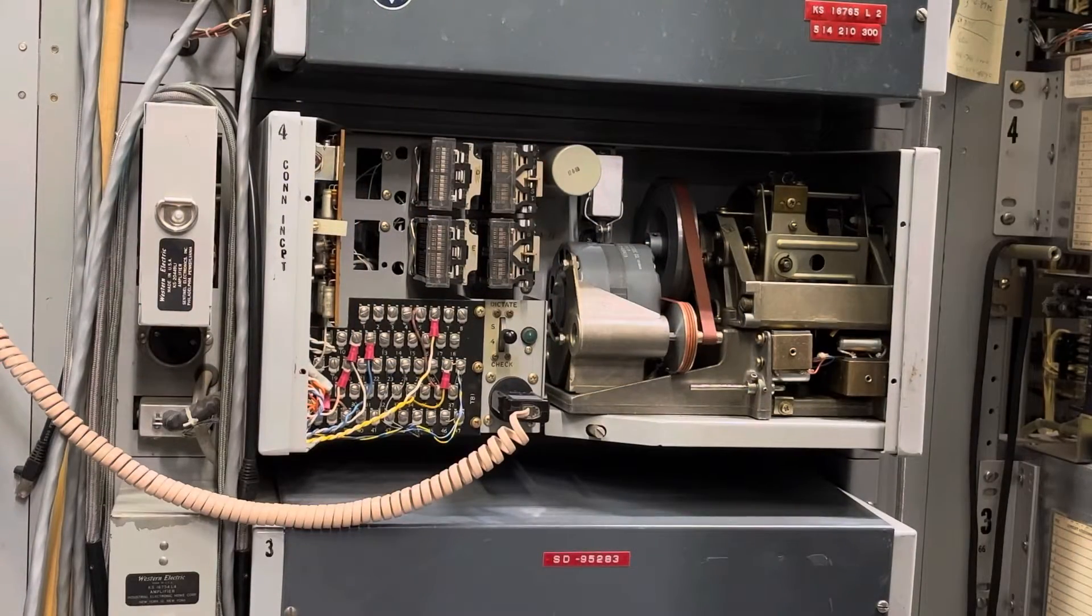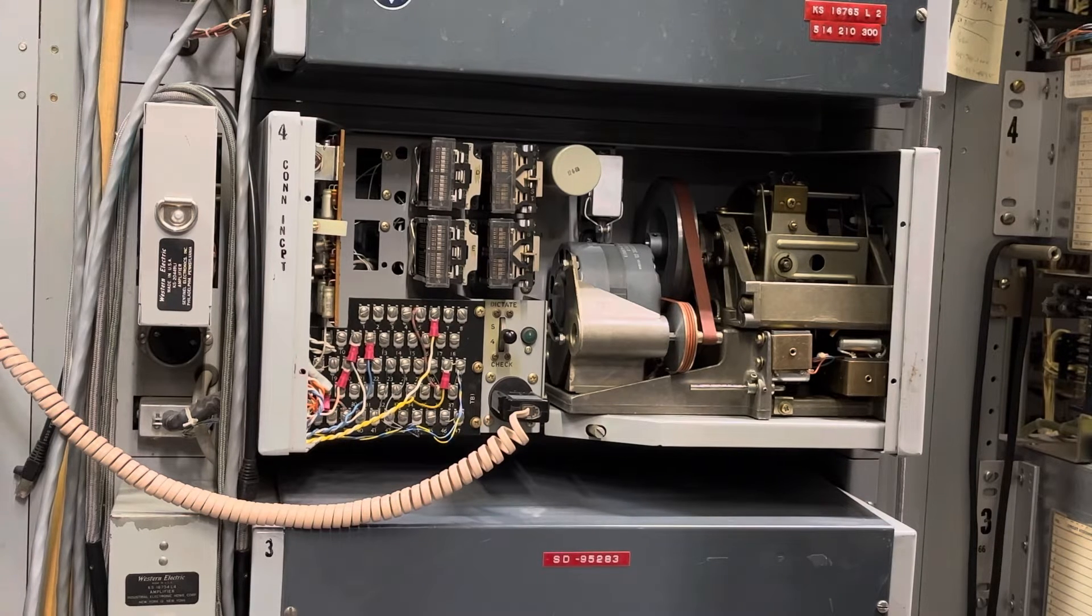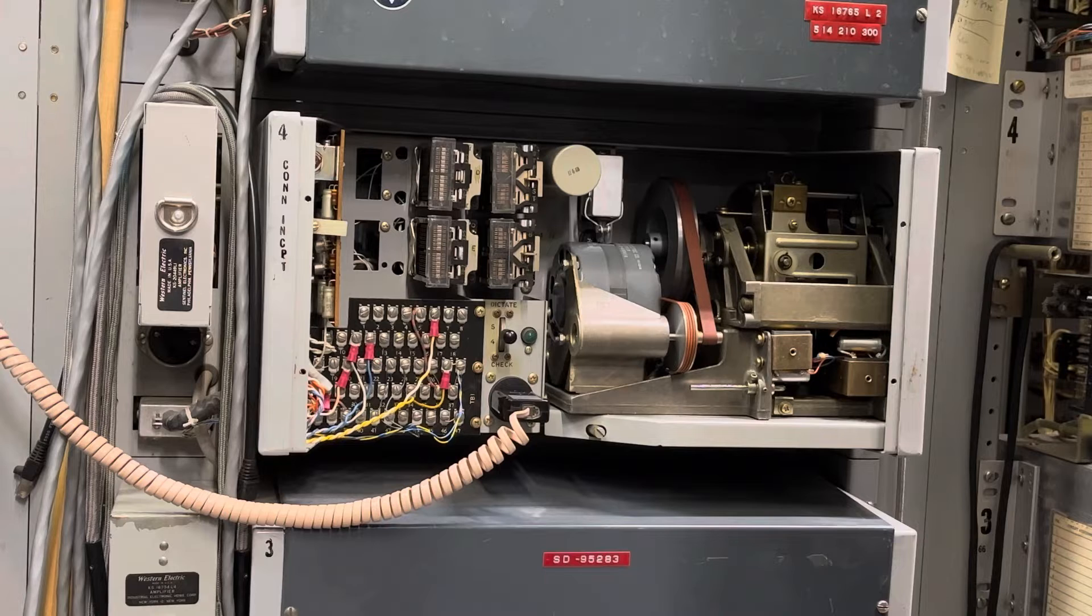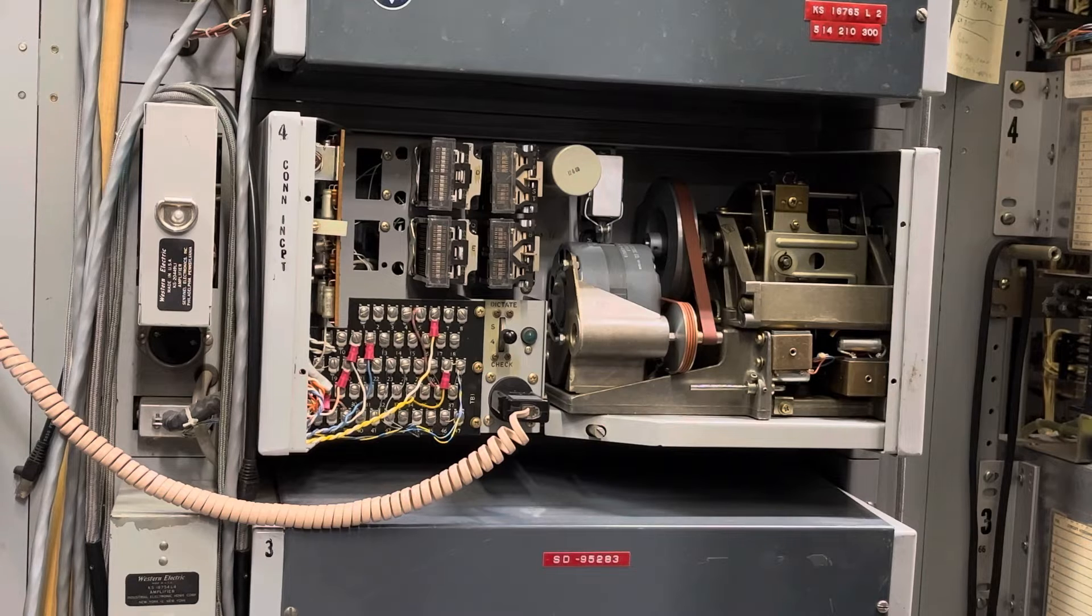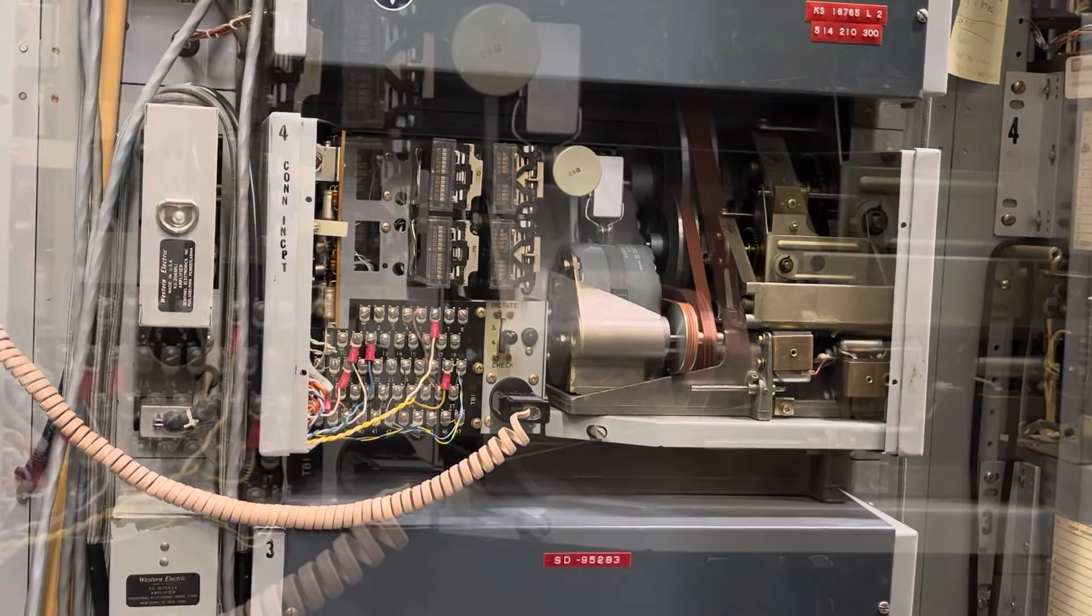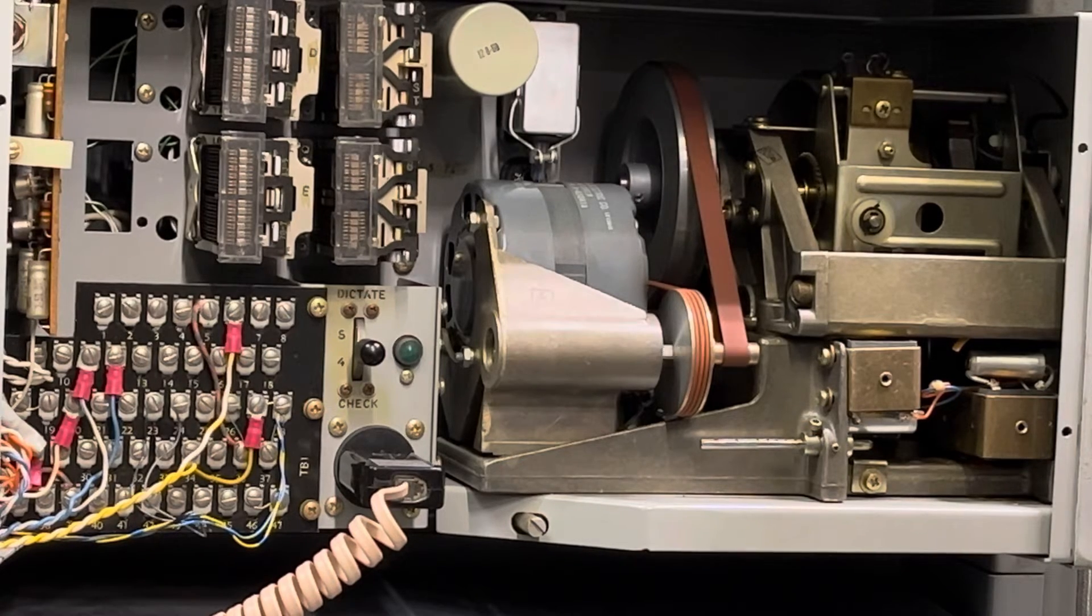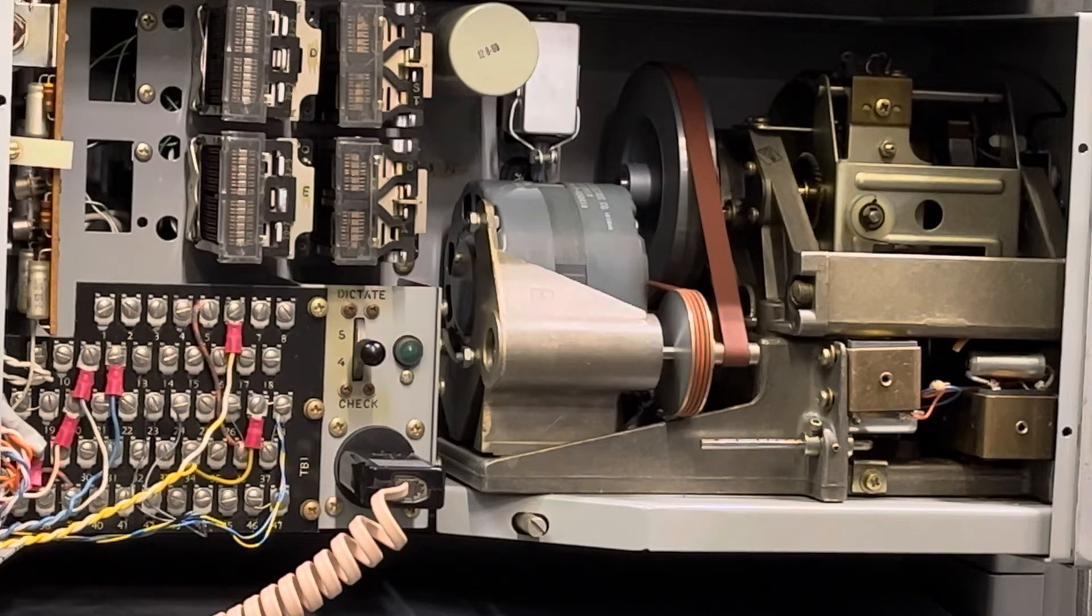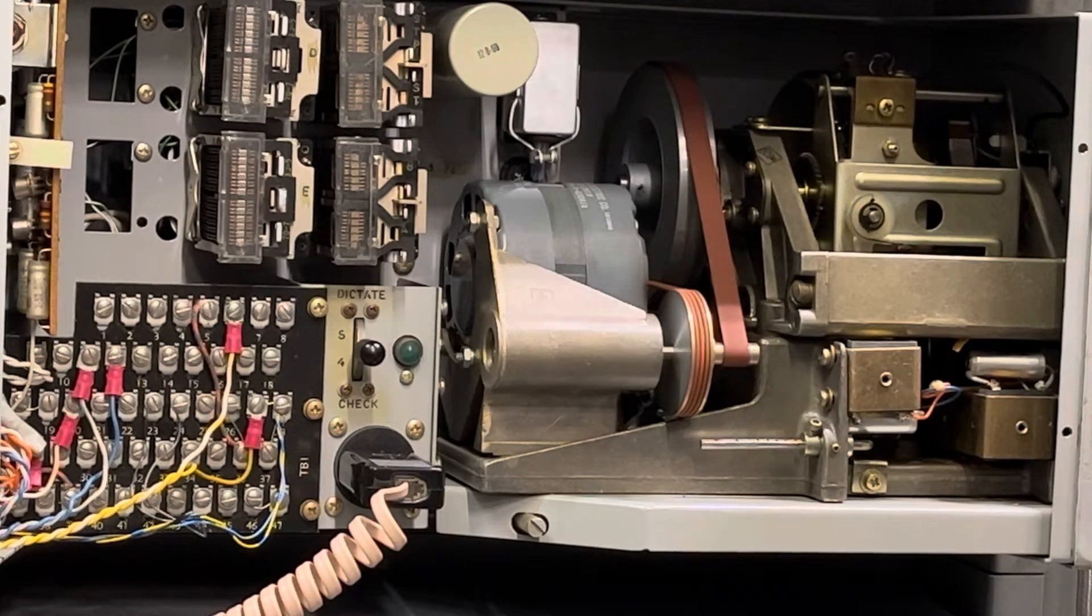I have a 7A Announcement Machine and this was a common piece of equipment located in most central offices. I'm sorry, we are unable to complete your call as dialed. Please check the number and dial again or ask your operator for assistance. This is a recording. I'm sorry, we are unable to complete your call as dialed. Please check the number and dial again or ask your operator for assistance. This is a recording.